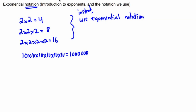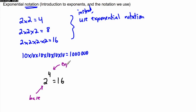Now, the way the notation goes is like this. Let's say we say 2 to the power of 4 equals 16. This right here we call the base. What this means is we're going to multiply this number by itself this many times. So here, this is called the exponent, or sometimes we say the power. This is 2 to the power of 4, which really means 2 times 2 times 2 times 2 — in other words, take this number and multiply it by itself 4 times.